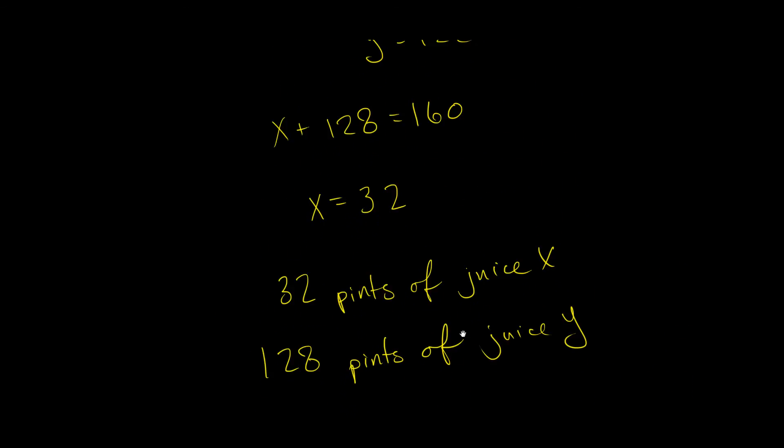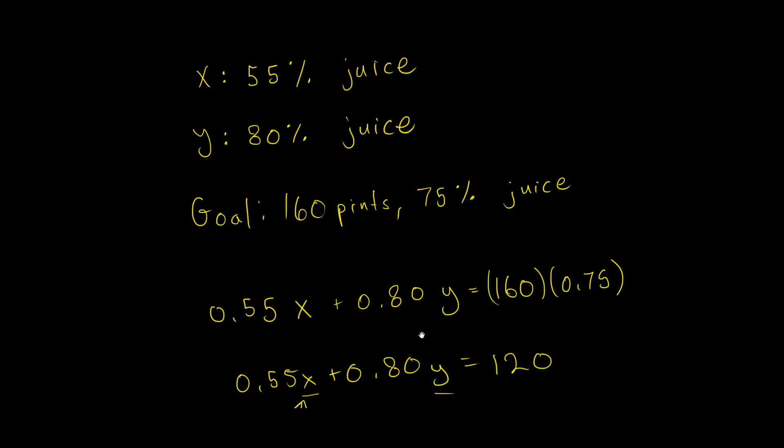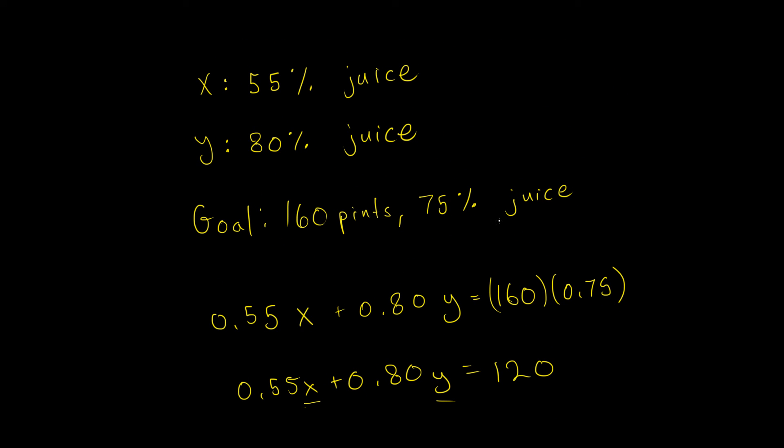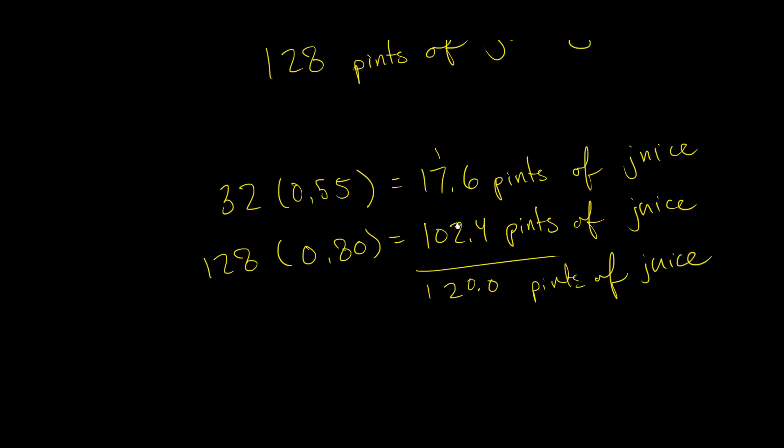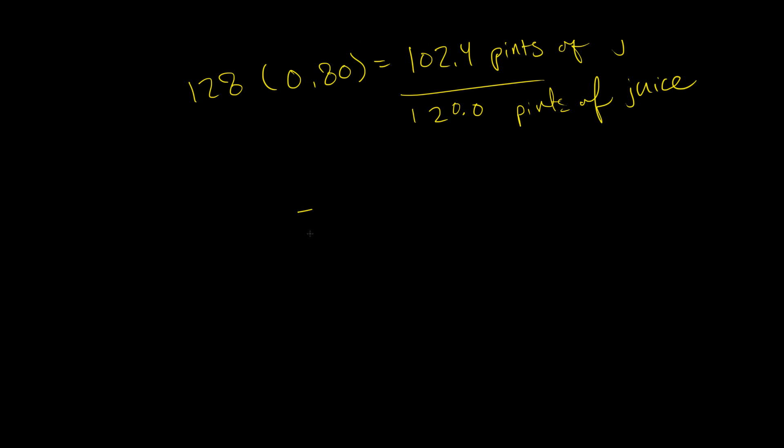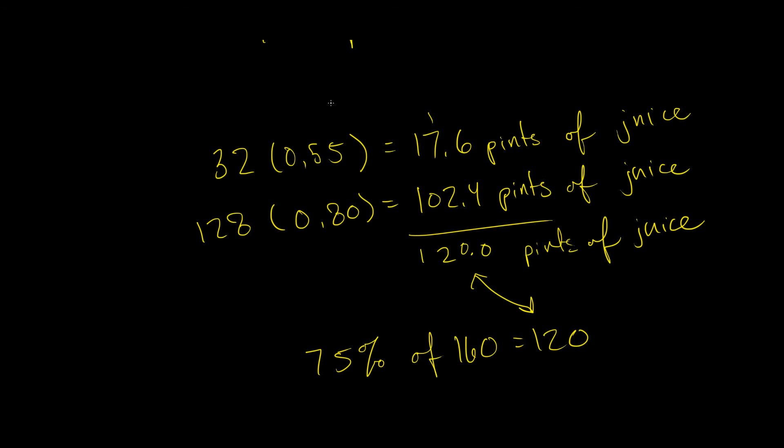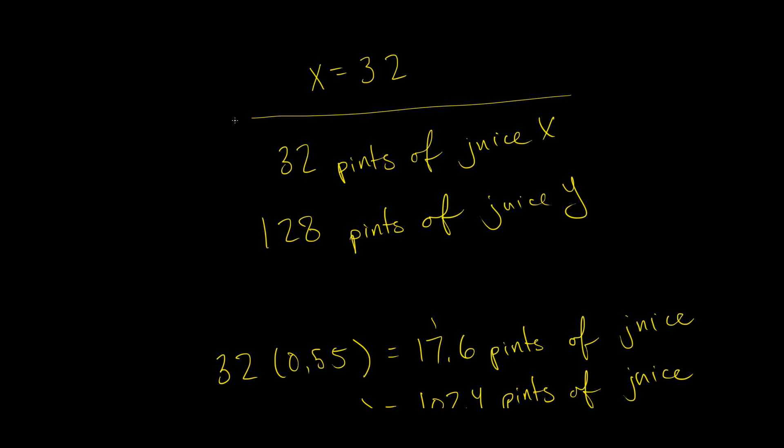And now originally we wanted 160 pints, 75% of which was pure juice. So 75% of 160 equals 120. So these two answers agree, which means this is our final answer.